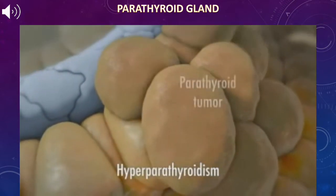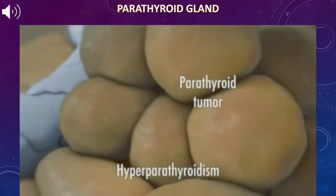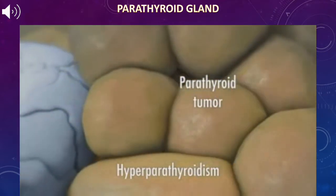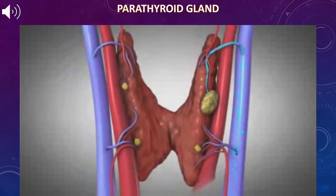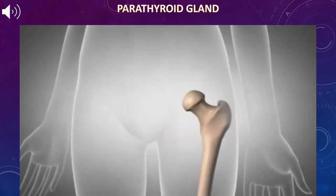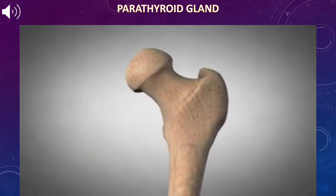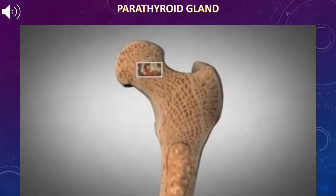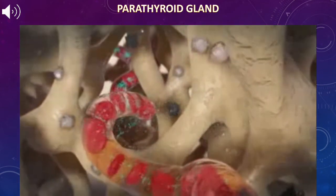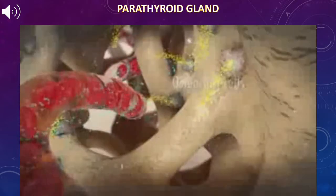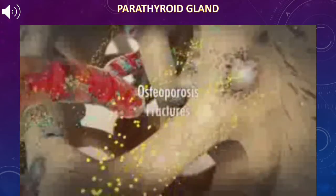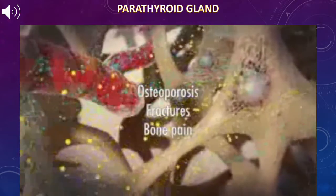Hyperparathyroidism occurs when one of the parathyroid glands develops a tumor. This tumor produces far too much parathyroid hormone, which is released into the bloodstream. The excess parathyroid hormone travels through the blood and into the bones, activating cells within the bones to eat away bone tissue, often causing osteoporosis, fractures, and bone pain.